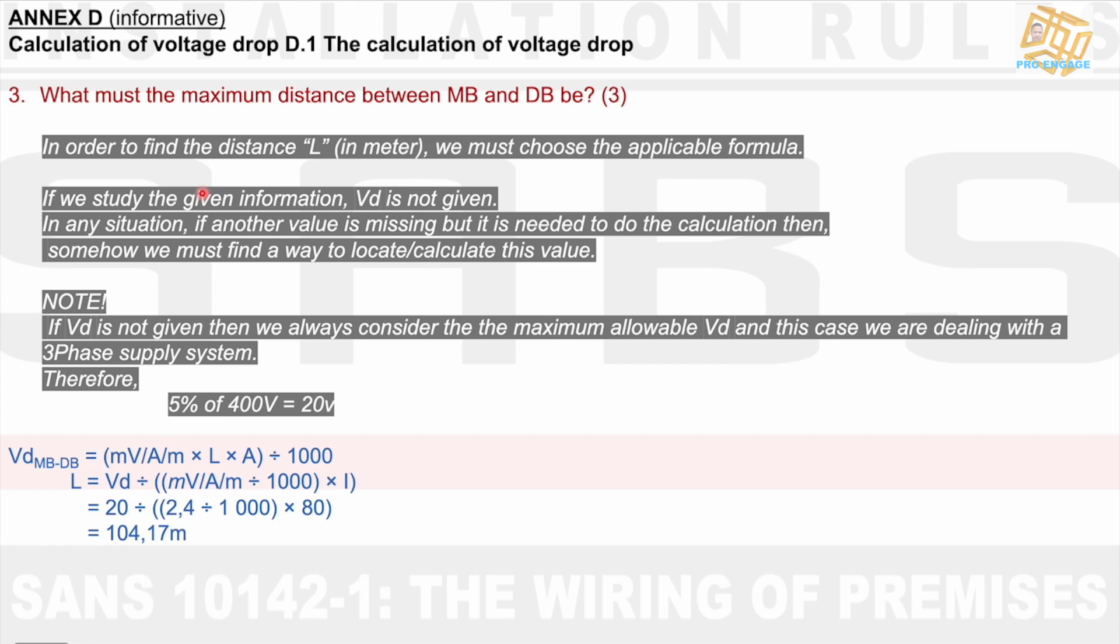Note, if VD is not given, then we always consider the maximum allowable voltage drop. And, in this case, we are dealing with a three phase supply system. Therefore, 5% of 400 volts equals 20 volts. Now, we need to manipulate this formula to make L the subject. Firstly, we use a formula VD equals MVAM times L times A divided by 1000. We manipulate the formula and VD then divides by MVAM divided by 1000, all of that times I. Your formula would be 20 over 2.5 divided by 1000, and that answer there times by 80. We divide that into 20 and we get a distance of 104.17 meters.